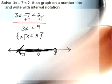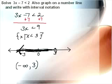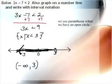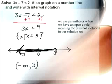Our interval notation uses parentheses and brackets and also the infinity symbol. Since we are going in the negative direction to infinity, the interval notation will be negative infinity with a parenthesis first, and then it will have the 3. It looks like an ordered pair — two numbers inside either parentheses or brackets depending on the problem. The 3 has an open circle; it's not included in my solution, so I use a parenthesis. We use parentheses when we have an open circle, meaning the point is not included in our solution set. We also use the open circle when it is a less than or greater than symbol.